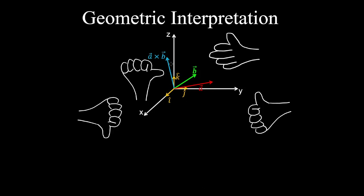Using the right-hand rule, we can determine the direction of the vector that results from the cross product between two vectors. If you take the palm of your right hand and put it in the plane of vectors a and b, and then curl your fingers from a to b, your thumb will point in the direction of the resulting vector, which is perpendicular to both vectors a and b.